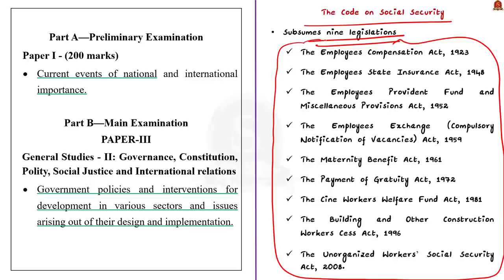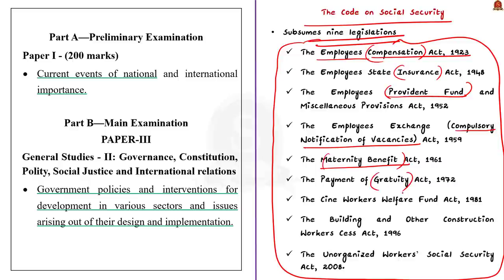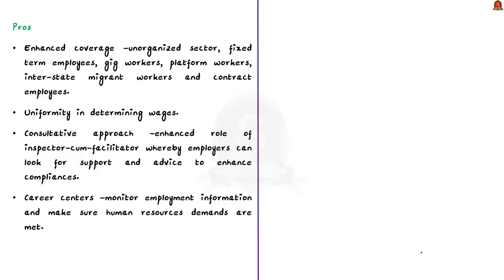The nine regulations subsumed by the Code include: the Employees' Compensation Act, the Employees' State Insurance Act, the Employees' Provident Fund and Miscellaneous Provisions Act, the Employees' Exchange Compulsory Notification of Vacancies Act, the Maternity Benefit Act, the Payment of Gratuity Act, the Cine Workers' Welfare Fund Act, the Building and Other Construction Workers' CESS Act, and the Unorganized Workers' Social Security Act. Now let us see the pros of having such a code.